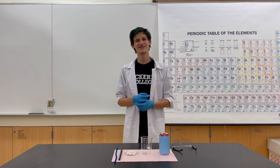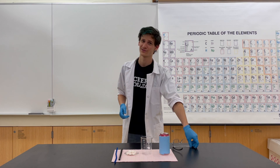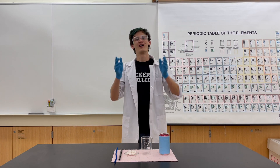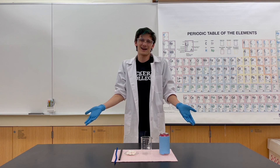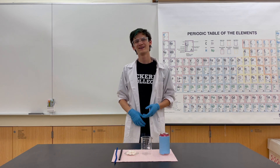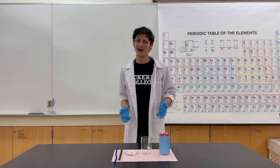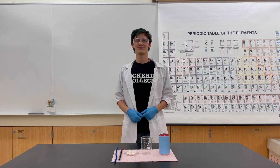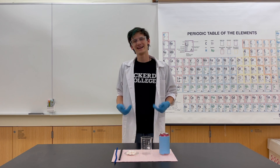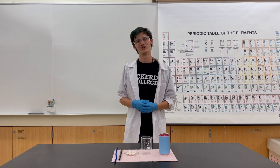Before we dive into things, we have to make sure we're equipped with proper lab attire. First, safety goggles are a must to protect our eyes from any splashes. Second, gloves — it's a chem lab. Thirdly, pants and closed-toed shoes to protect from anything going down under. And lastly, I'm wearing my lab coat because it's cool and it keeps my clothes clean from any out-of-control soda eruptions.